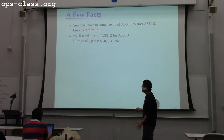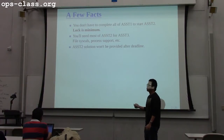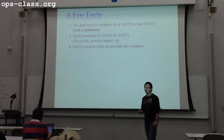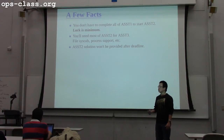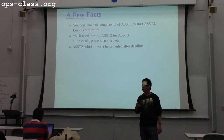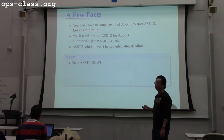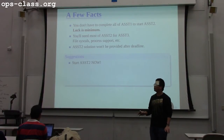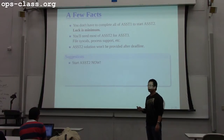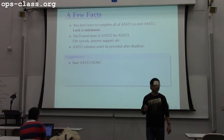Another important fact is that the assignment two solution won't be provided even after the deadline. Which means if you want to do assignment three, you have to do assignment two anyway — before that deadline, not after. So my suggestion would be to start assignment two right now, because it's quite tight. You have to write design documents and implement all those system calls and process support. It's a lot of work, so you want to start as soon as possible.